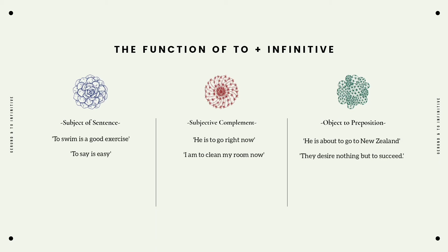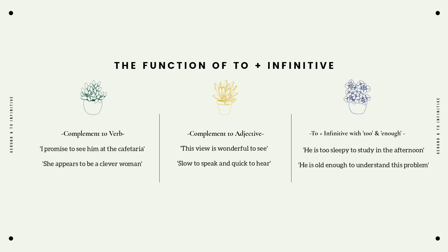Another example of subjective complement: 'I am to clean my room now.' The third function is object to preposition. For example: 'He is about to go to New Zealand' and 'They deserve nothing but to succeed.' The fourth function is complement to verb. For example: 'I promise to see him at the cafeteria.'